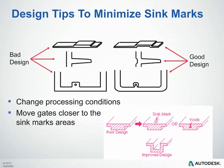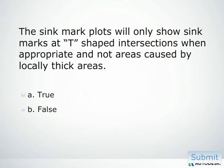Some design tips to help minimize sink marks: on the left-hand side of the example image, there are bad designs with localized thick regions that will likely result in sink marks. On the right, modifications reduce the probability of sink marks. If you can't modify your part design, you could try changing processing conditions to process them out. You could also move gates closer to the sink marks to help pack them out better.